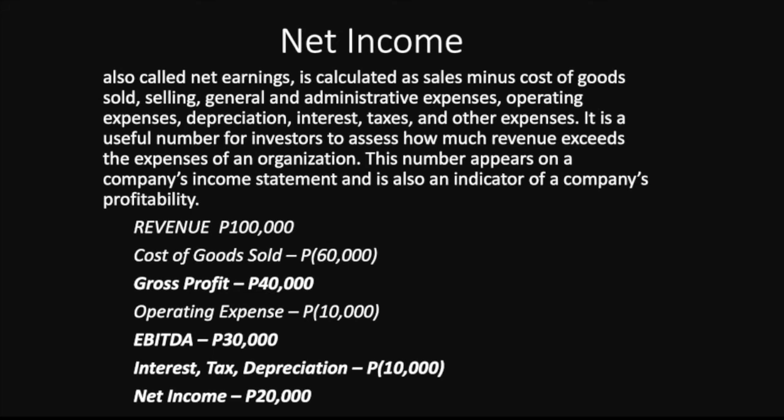Net income — also called net earnings — is calculated as sales minus cost of goods sold, selling, general, and administrative expenses, and all other expenses. It is useful for investors to assess how much revenue exceeds expenses, and shows whether the company is at a profit or a loss. Net income is essentially the bottom line of the income statement.